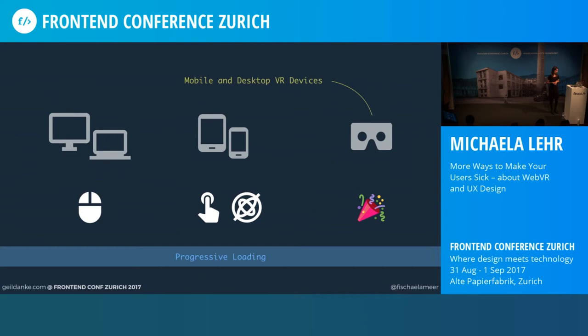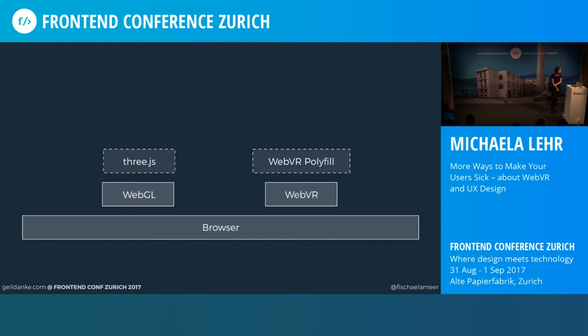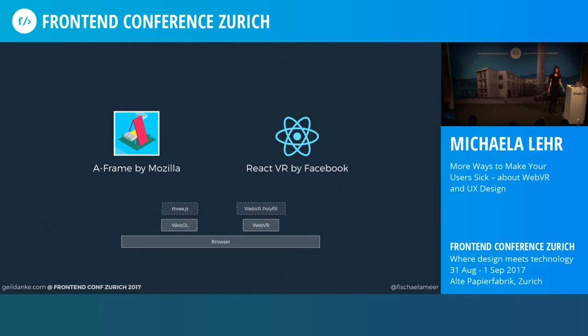Writing your apps with WebGL or even with Three.js means you have to write a lot of JavaScript. This is one reason why there are libraries that try to reduce the effort. First, there's A-Frame by Mozilla, and then there's React VR by Facebook — I will tell you some brief words about both of these libraries.